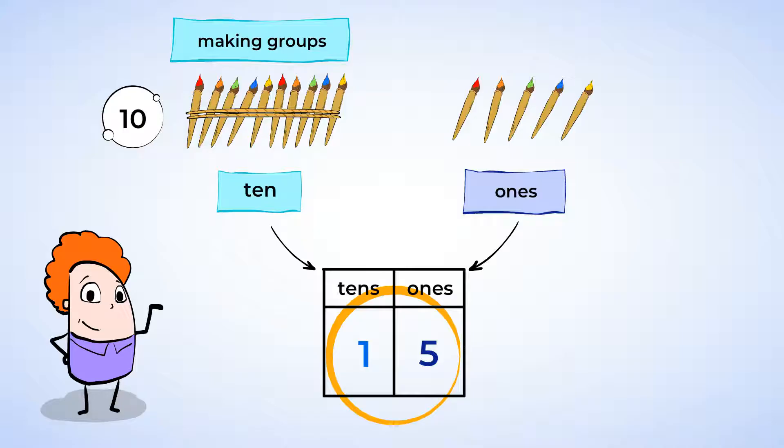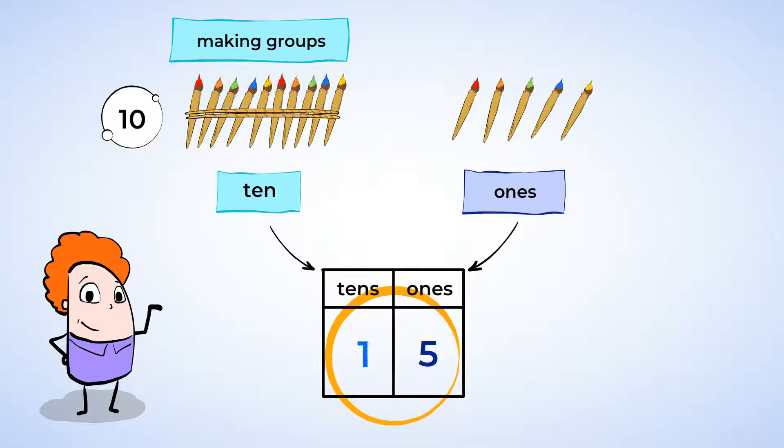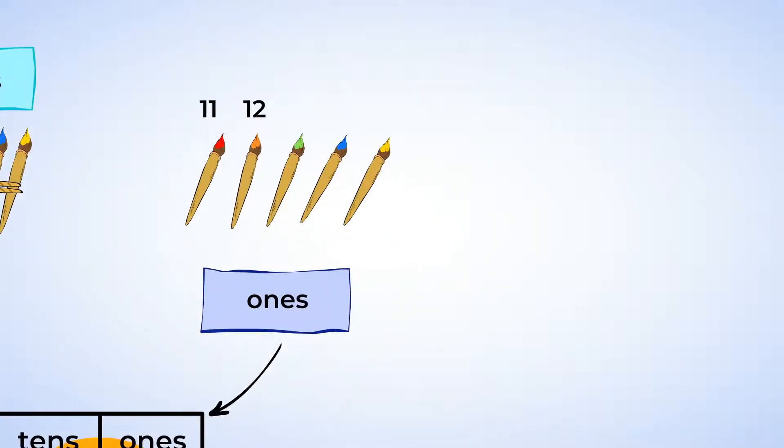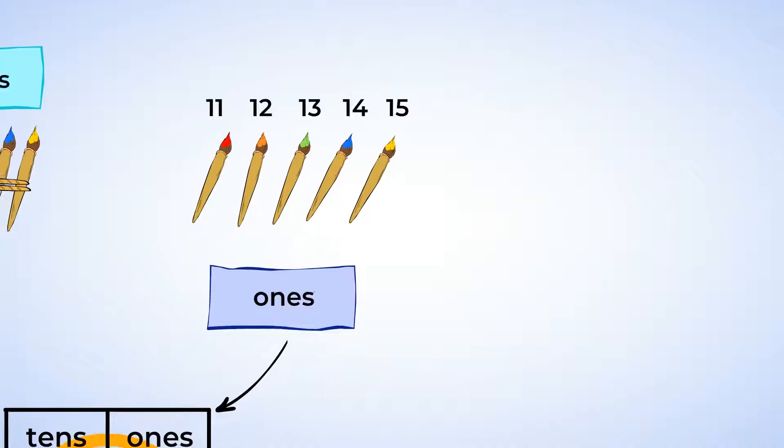And just to be sure, we can check this by counting. Well, we already counted the group of 10, so we don't need to count that again. We can count on from there. 11, 12, 13, 14, 15. We have 15 paintbrushes.